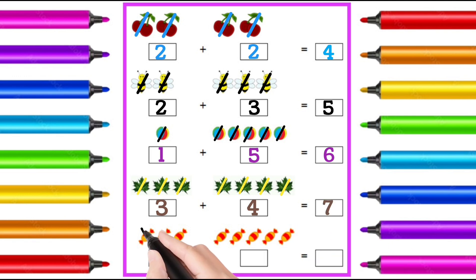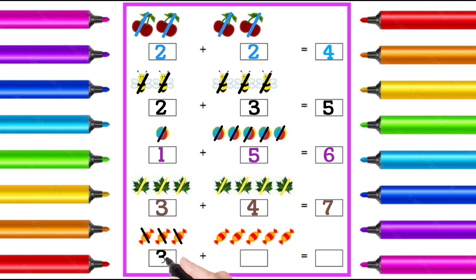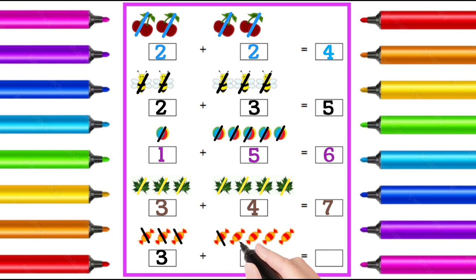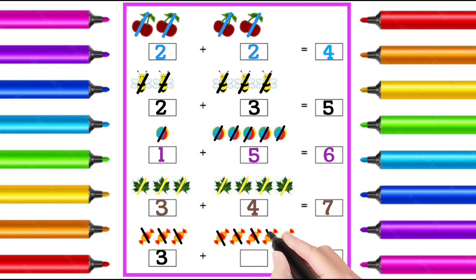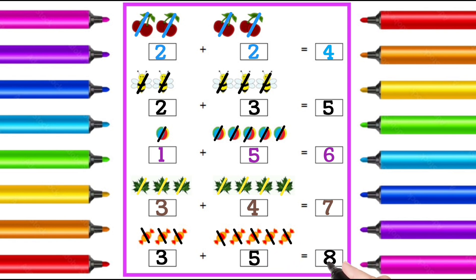1, 2, 3 — it is 3. 1, 2, 3, 4, 5 — it is 5. 3 plus 5 is equal to 8. Let's get started.